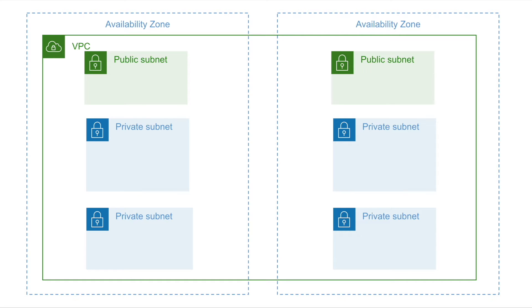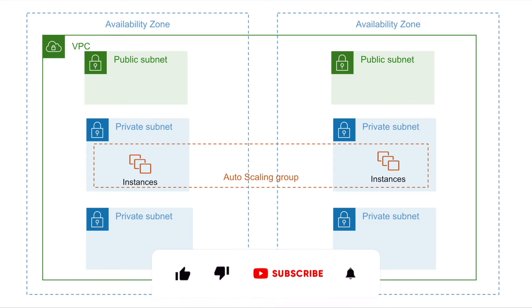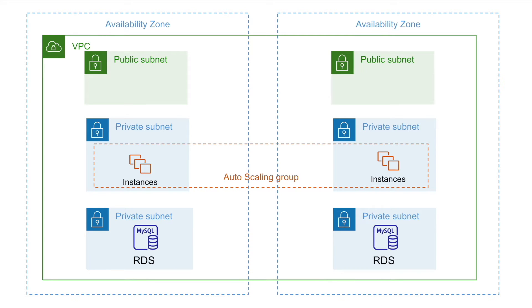We will create EC2 instances to host our application, which will be in autoscaling. Next, we will create the database, which will have multi-AZ enabled for high availability. Next, we will create the load balancer in the web layer, which will route the traffic to EC2 instances.